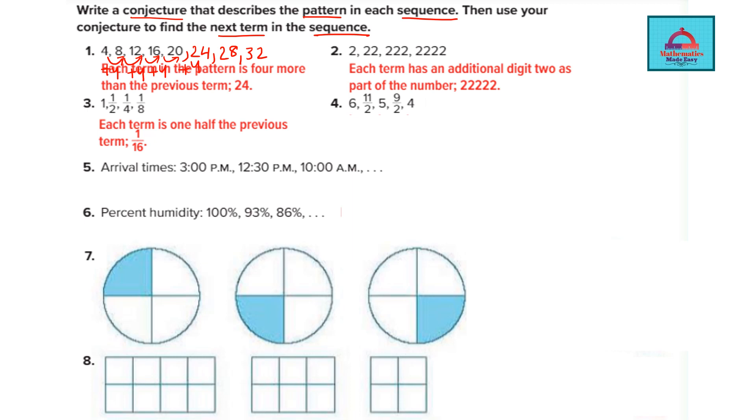Similarly if you look at this you see there is 1 two, then it becomes 2 twos, then 3 twos, then 4 twos. So the next would be having 5 twos. You can use this pattern to write a conjecture and the next term.